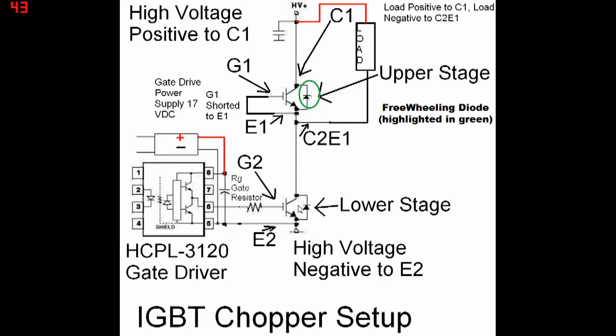So, when this IGBT turns off, the load's inductance will discharge through the freewheeling diode. So, the freewheeling diode takes the inductance as current rather than voltage. So, what's the deal with the diode creating a high turn-on current?